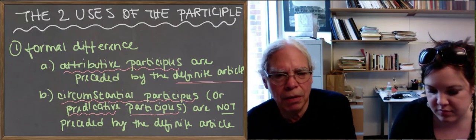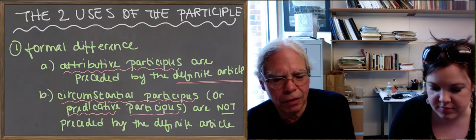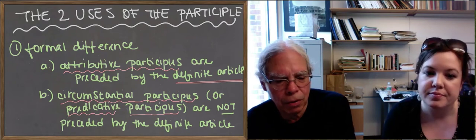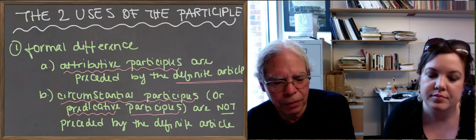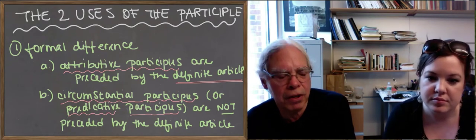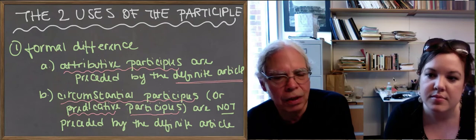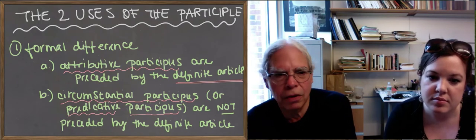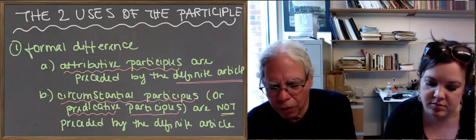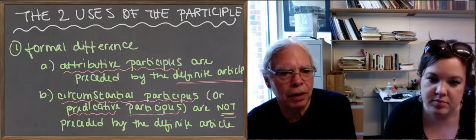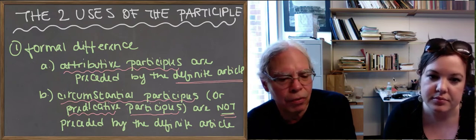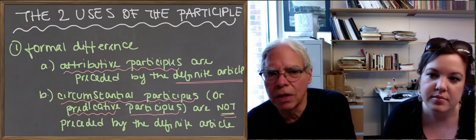By 'before them' we mean closely in front of them — either immediately in front of them or, like attributive adjectives, in the same position as attributive adjectives. The other kind, the circumstantial participles, have no article preceding them, and that's how you can tell that they're circumstantial. The way they function is totally different.